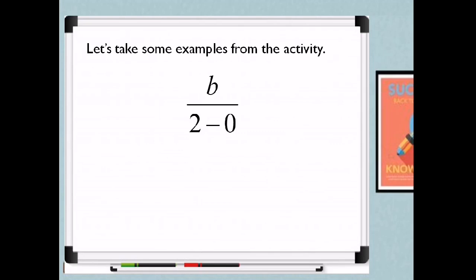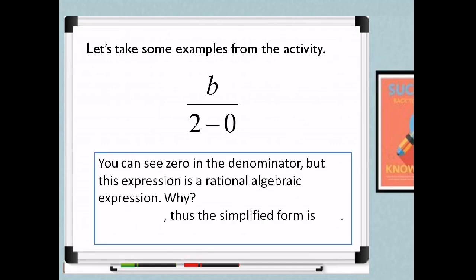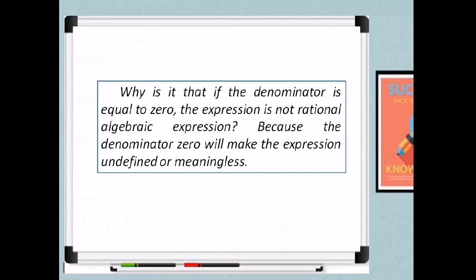How about our next example? You can see 0 in the denominator, but this expression is actually a rational algebraic expression. Why? Because 2 minus 0 equals 2, so the simplified form is b over 2. Remember: if the denominator is equal to zero, the expression is not a rational algebraic expression because division by zero makes the expression undefined or meaningless. Division by zero is not allowed — so if an expression has a denominator of zero, it is undefined and not a rational algebraic expression.